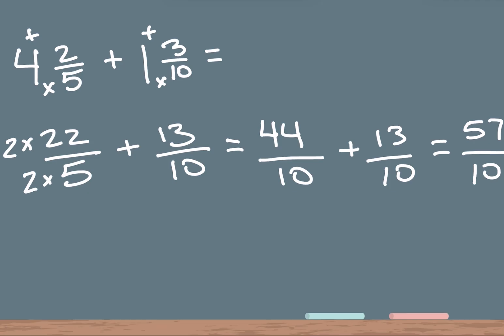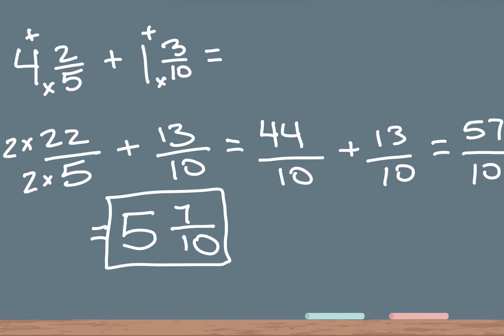The bottom number stays the same. Now this is an improper fraction because the top number is higher than the bottom number, so we're going to convert it back to a whole number. To do that, we see how many times 10 goes into 57. 5 times 10 is 50, so 5 would be our whole number. From 57 we have 7 left, and the bottom number remains the same. So our answer is 5 and 7 over 10 — the same answer as before. As you can see, we got to the same answer two different ways, and you can use whichever way is easiest for you.